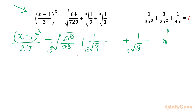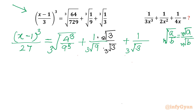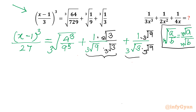The property used here is: the nth root of a over b, we can write as nth root of a divided by nth root of b. Now I will use one manipulation step. I will multiply in the numerator and denominator by cube root 3, here also cube root 3, and in the third term I will multiply by cube root 9, and in the denominator the same cube root 9. Now you can see here it is cube root 27, and cube root 27 is 3.